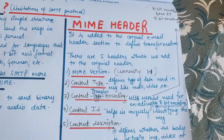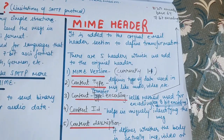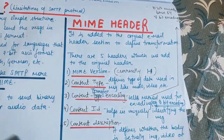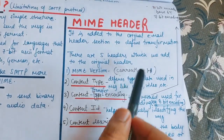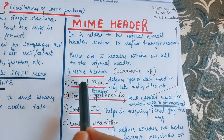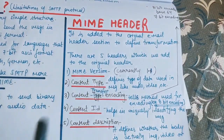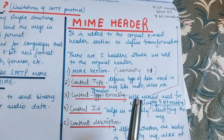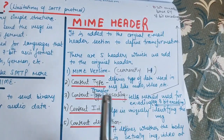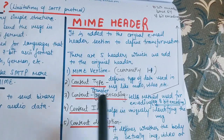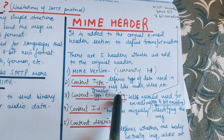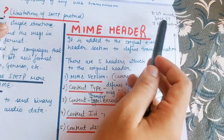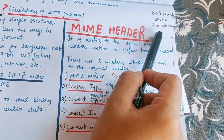Now let us discuss the MIME header. When we have an email, we add the MIME header to the email header and then send the message. It is added to the original email header section to define the transformation. In the MIME header there are five fields. First is MIME Version — it tells the latest version, which is currently 1.1. Second is Content Type — it tells what type of data is being used in the email, such as an audio file or a video file. Third is Content Transfer Encoding — it tells what type of encoding method is being used, for example 8-bit encoding, Base64, or 7-bit encoding.